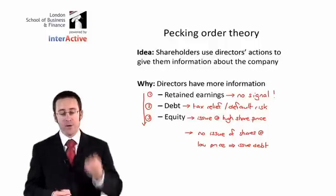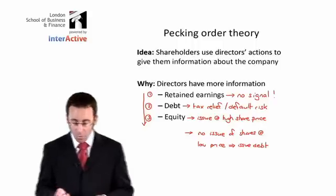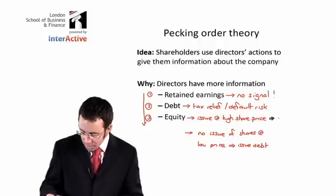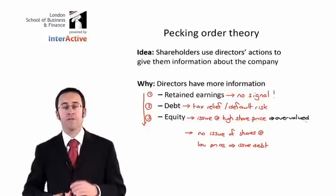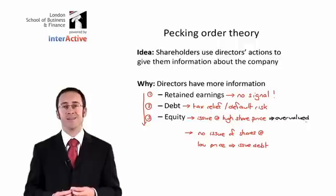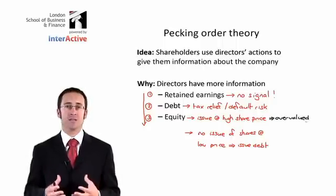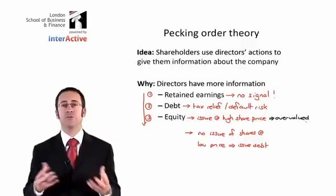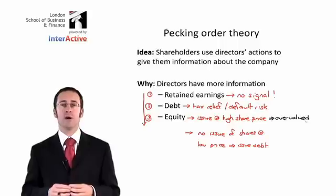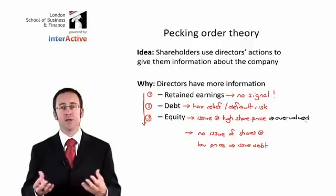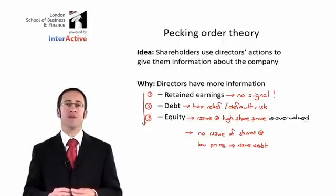Why will shareholders use those directors' actions in terms of their shareholding? If the directors issue shares when the share price is high, shareholders will consider the company's shares to be overvalued. If they are overvalued, shareholders will think they can make some gains by selling their shares at a very high price. However, as more and more shareholders sell, the share price begins to fall. As it falls, new shareholders come on board with different levels of risk and returns, which could ultimately push up your cost of equity and have an impact on your weighted average cost of capital and your marginal investment decision-making processes.